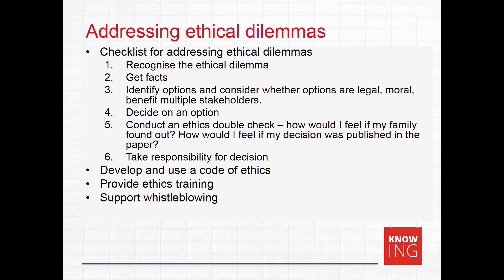Third, the legal, moral and societal implications of the decision need to be considered. Once a decision is made, building in a specific step to consider the ethics of the decision can be helpful. Sometimes thinking about how you would feel if people close to you found out, or if it was publicly known, can help to provide clarity. Finally, people are responsible and accountable for the decisions they make.